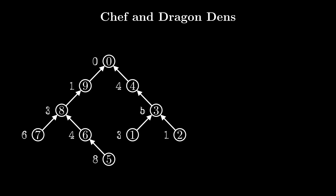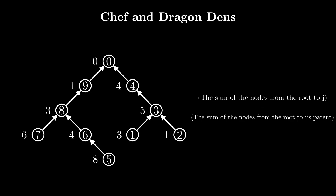Let each node have a weight A[i] associated with it, with A[0]=0 since it's a dummy node. For a journey from i to j, we need to find the sum of weights on the path from i to j. If we didn't have to deal with updates, this can be solved by calculating the sum of nodes from the root to j minus the sum from the root to i's parent. For i=8 and j=5, the sum of root to j is 16, and the sum of root to i's parent is 1, giving 16 - 1 = 15.